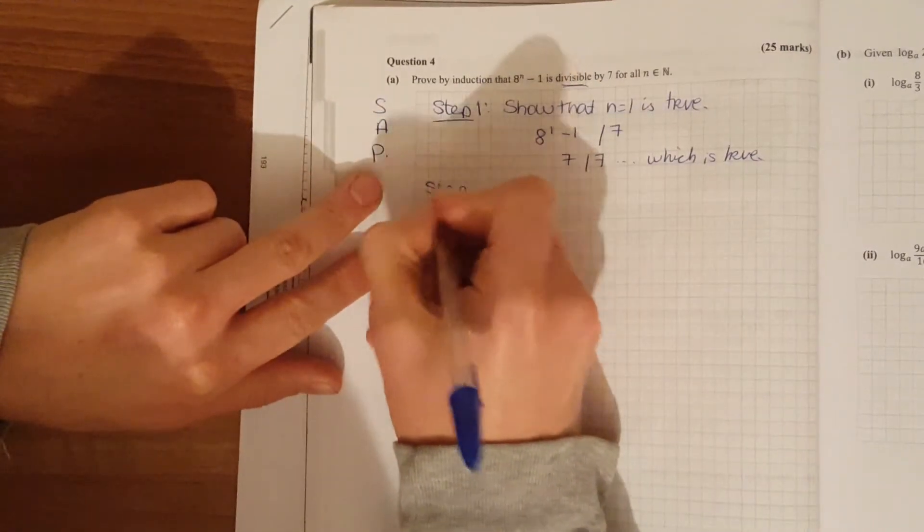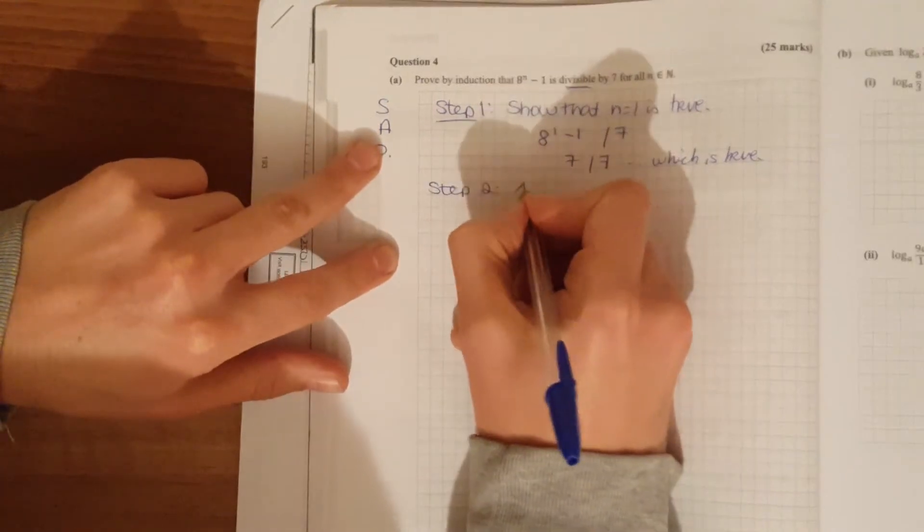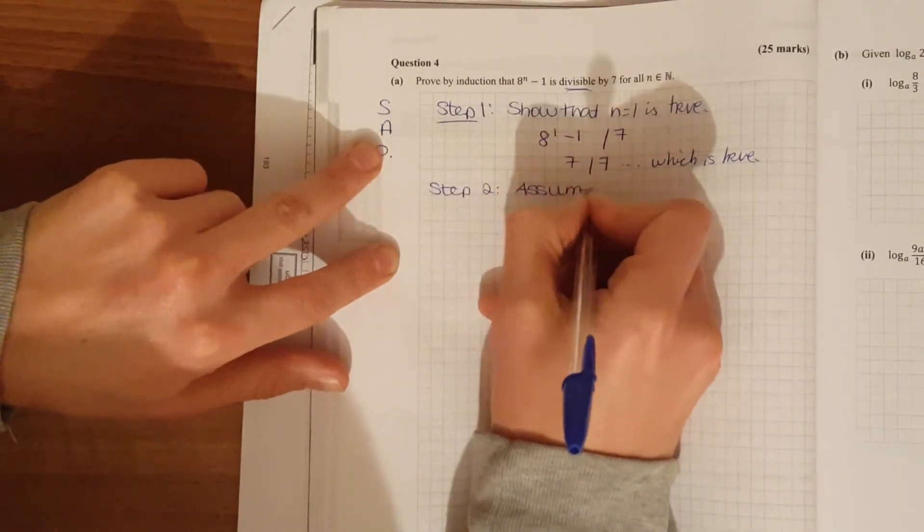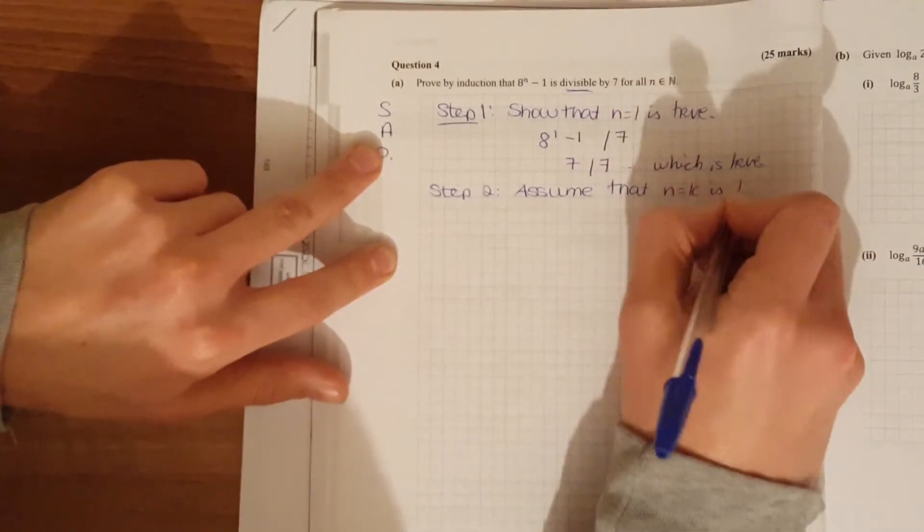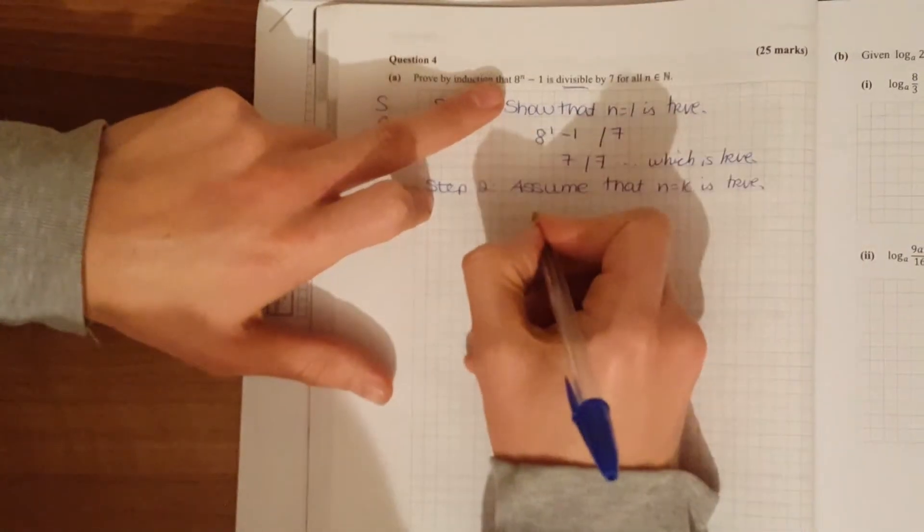Step 2. Assume. So your A and assume that n is equal to k is true. Solve k for your n.